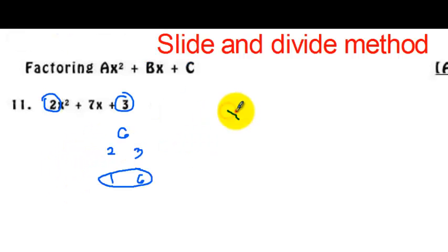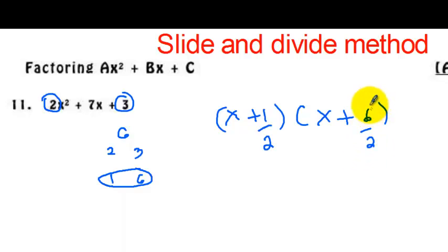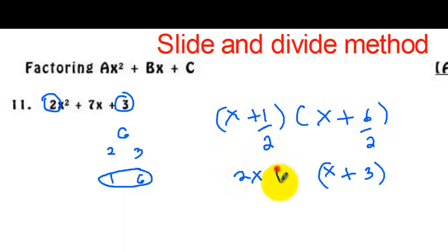So you will have x plus 1, x plus 6. But we are not yet done. The number we used to multiply c — whatever a is — we are going to use that a to divide the second term of each factor. So divide this by 2, divide this by 2. If you can simplify 6 over 2, that will be one of the factors. 6 divided by 2 is 3. Now, 1 half gives a decimal, so you need to slide your 2 beside x, making 2 the coefficient of x. So you will have 2x plus 1.